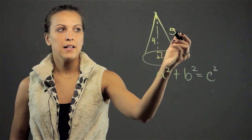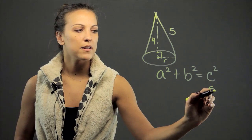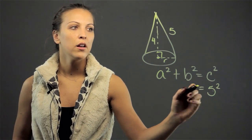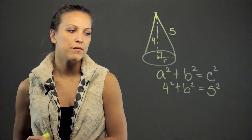So 5, my slant height, is the longest side. It's across my right angle, so that becomes my hypotenuse. So I'm going to substitute c with 5 squared. One of the legs is 4, so I'm writing 4 squared plus b squared equals 5 squared.